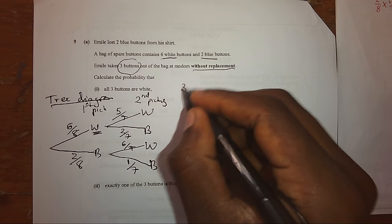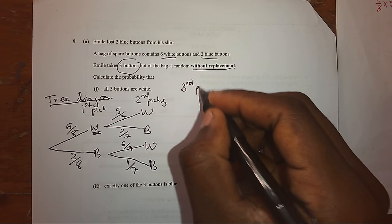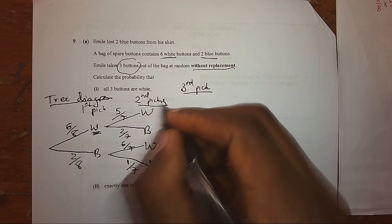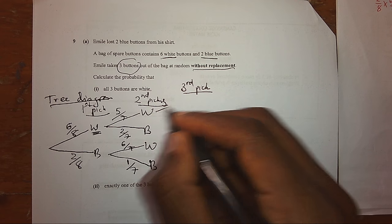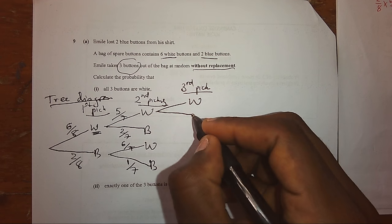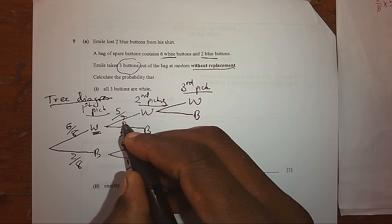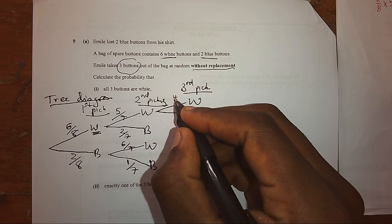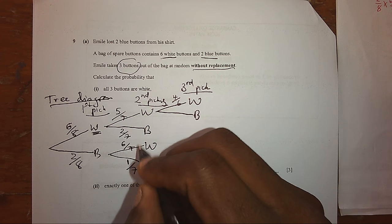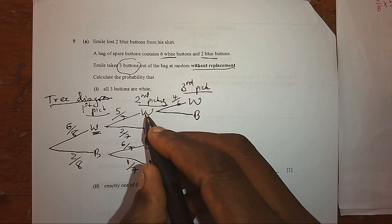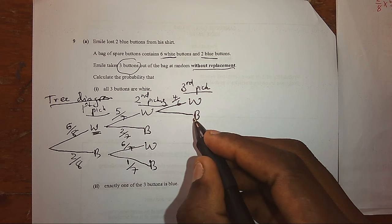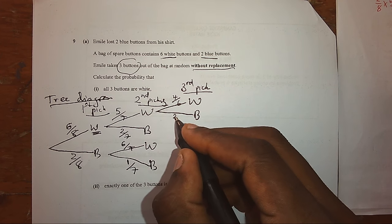Picking the third button. Picking white, you can pick white again or you can pick blue. Now, since white here was five, now there will be four over six. Remember, the first was white, the second was white, meaning blue was not touched at all, there are still two in fact.